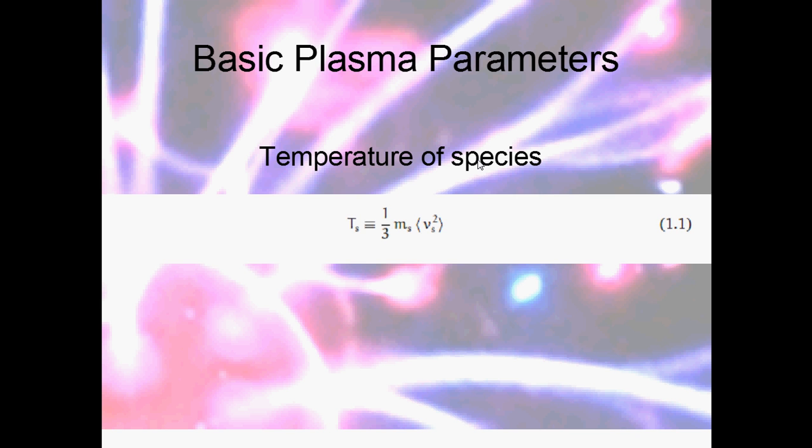Now, the kinetic energy in a particular direction or dimension is going to be half mv squared. The average energy of a three-dimensional distribution of particles is going to be 3 over 2 times kT because there's three different dimensions and there's half kT energy in each dimension. So we can see that the temperature is going to be 2 over 3 times a half mv squared, so 1 over 3 mv squared.